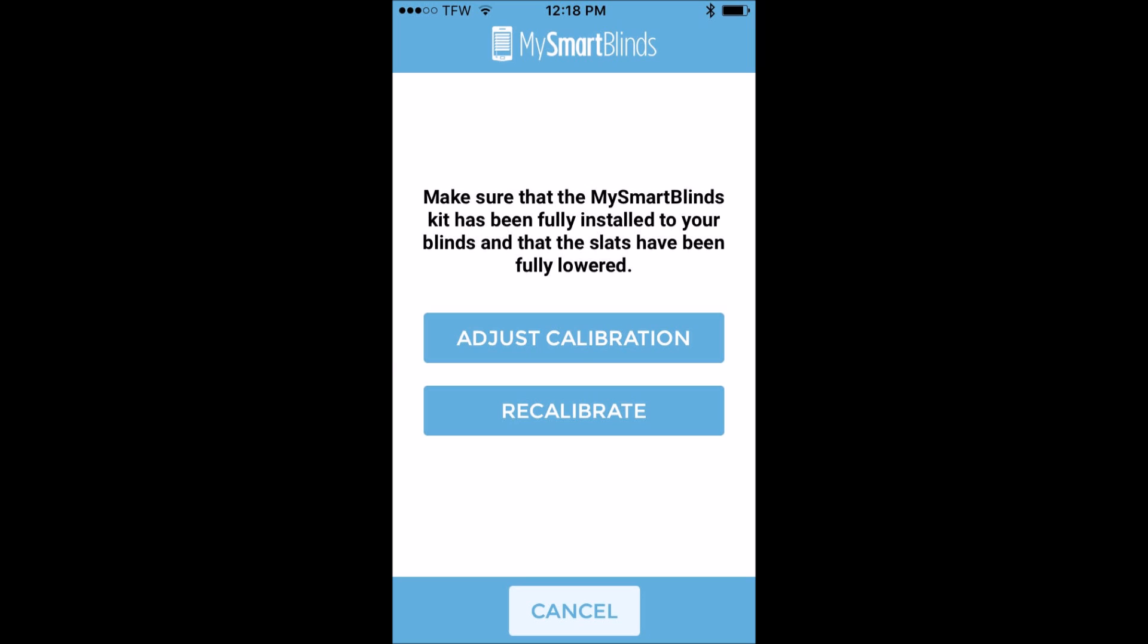Part of the programming process is called calibration. It's a fancy word for simply teaching your My Smart Blinds motor where the fully open position is, where the fully closed up position is, and where the fully closed down position is. You'll notice on your screen there's a recalibrate button and there's adjust calibration. Calibrating is the initial step then you go in to adjust the calibration to get it just right per your liking.